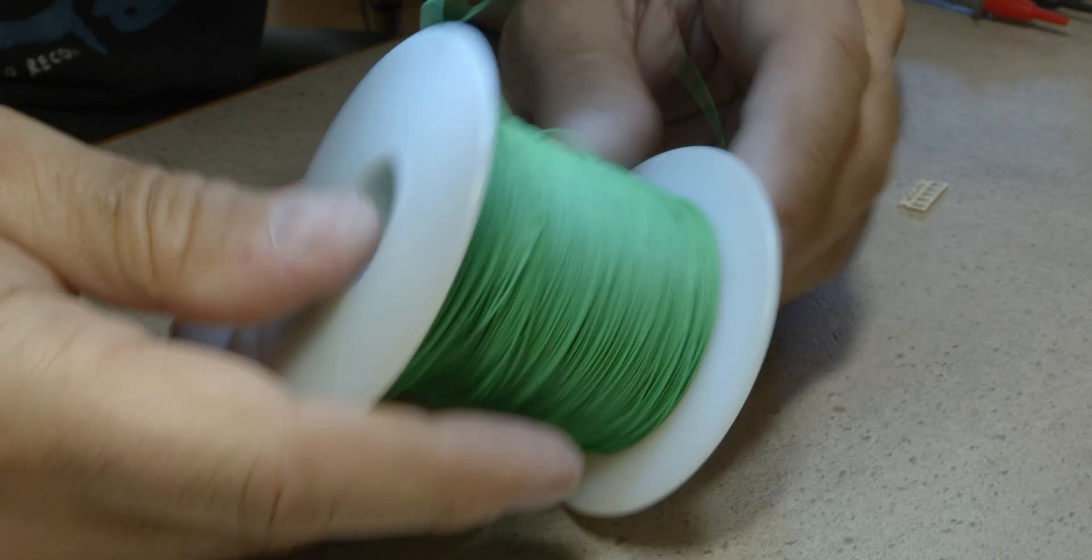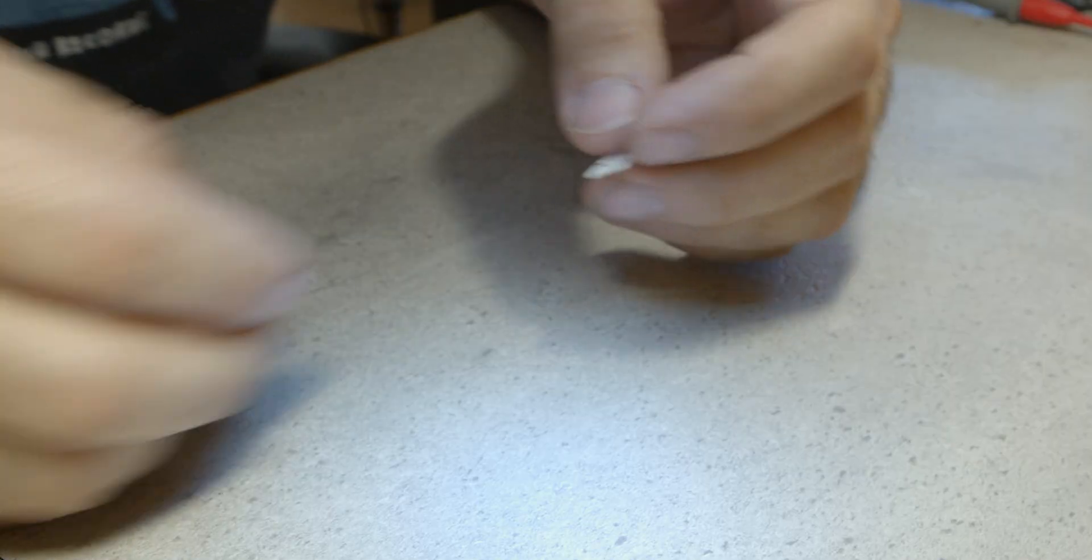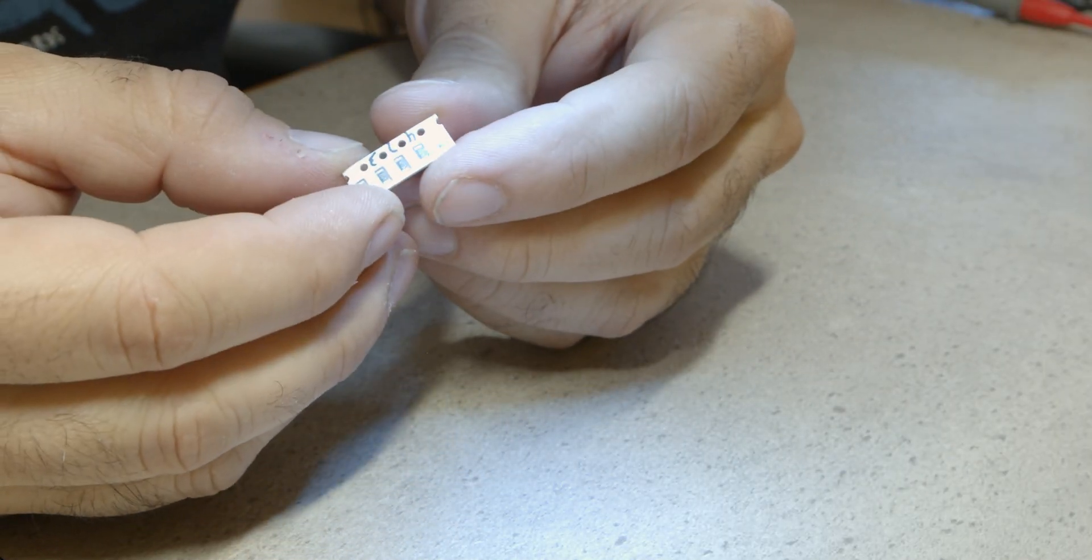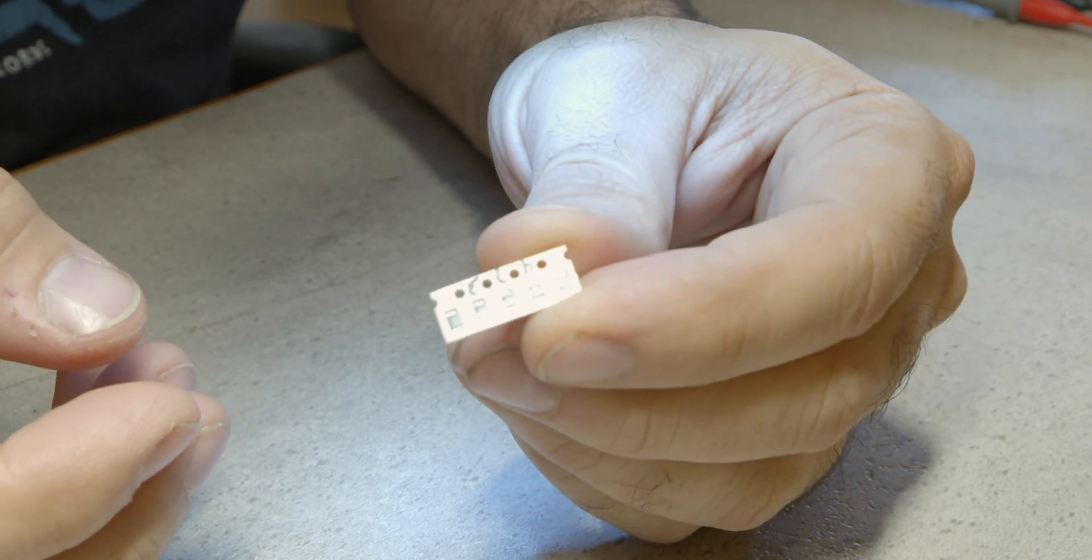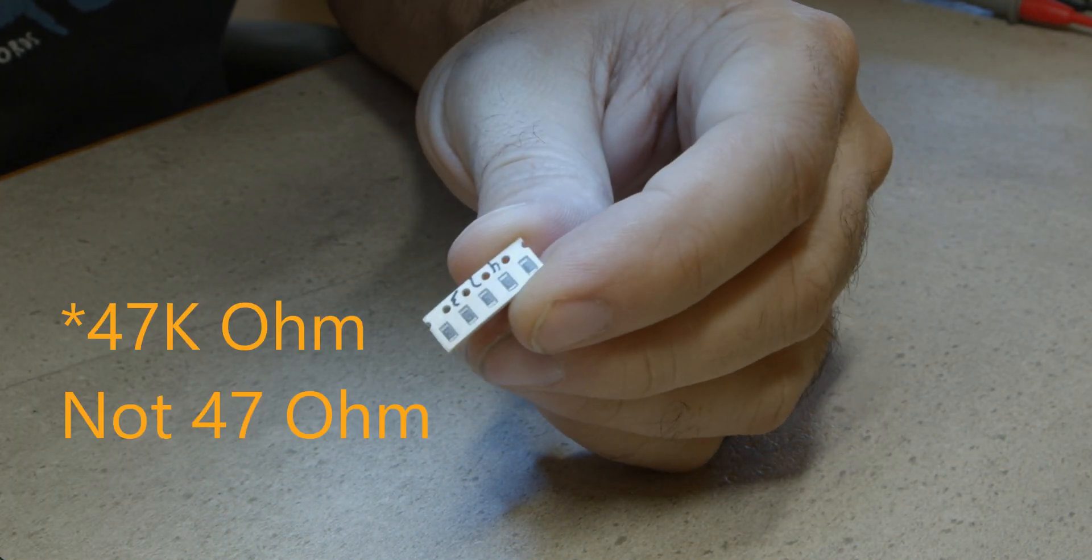As for parts, you'll only need two, some 30-gauge Kynar wire and one 50K ohm surface mount resistor. As long as the value is close, it'll work. I'm using a 47 ohm resistor because that's what I had.